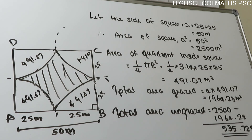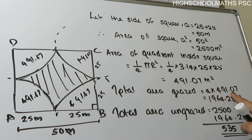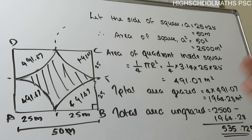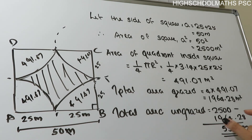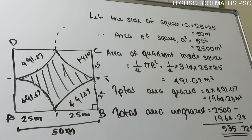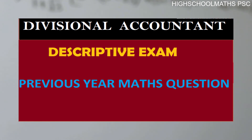The total area grazed is 4 × 491.07 meters square. Total area of square is 2500 meters square. Area left ungrazed equals 2500 minus total grazed area, giving approximately 35.8 meters square. If you want to comment on this video, please like, share and subscribe for the next video.